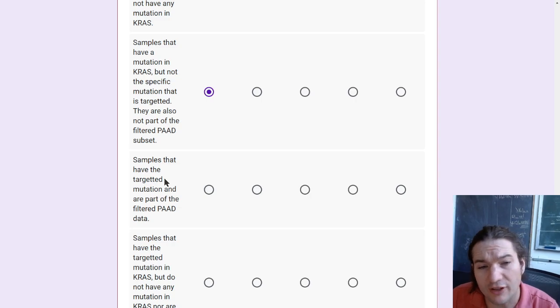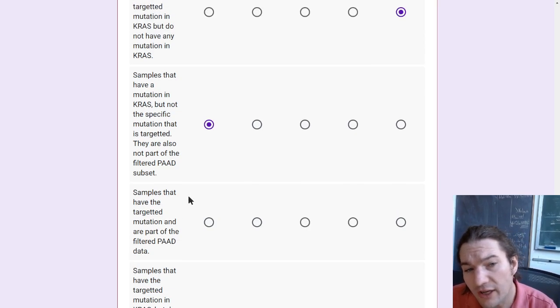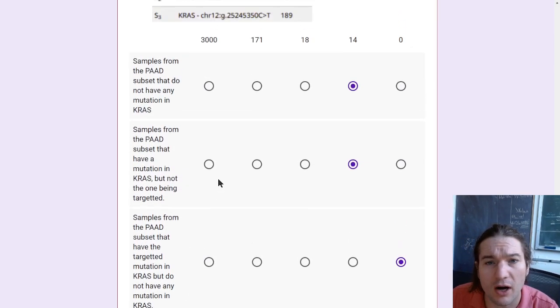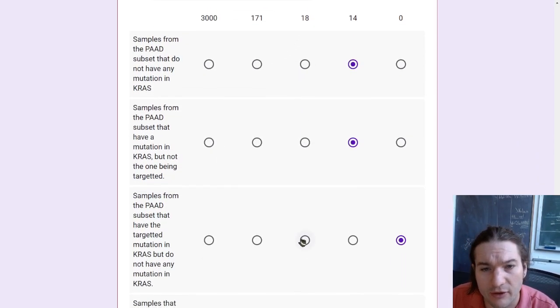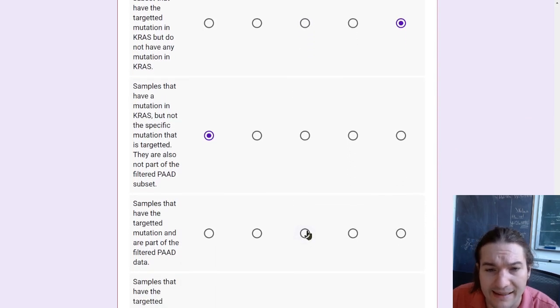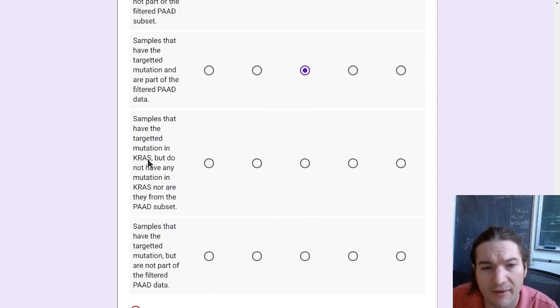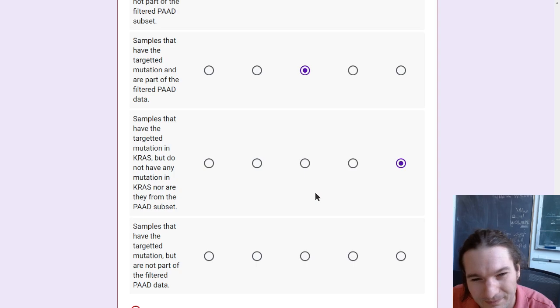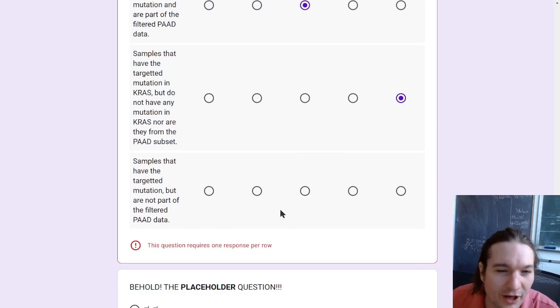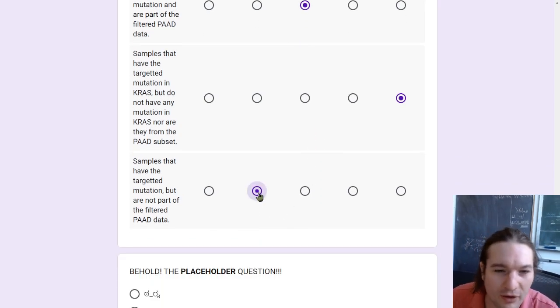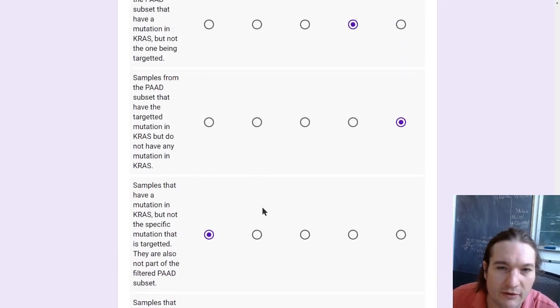Samples that have the targeted mutation and are part of the filtered pad data set. That's actually the one we're most interested in to compare to our intact copies. So that is that middle section, that 18. Samples that have the targeted mutation in KRAS, but do not have any mutation in KRAS. So that's obviously zero because that's impossible. Samples that have the target mutation, but are not part of the pad filter. That is that 171 that we identified.